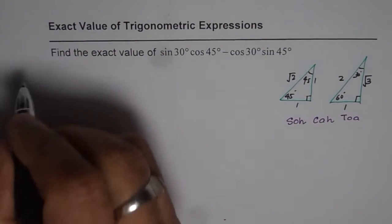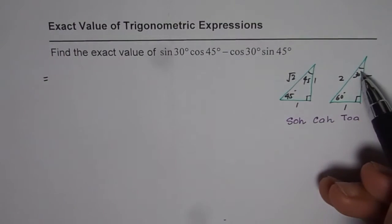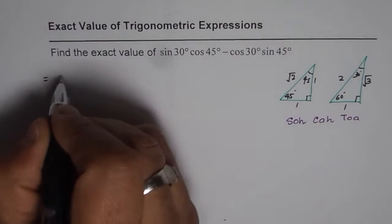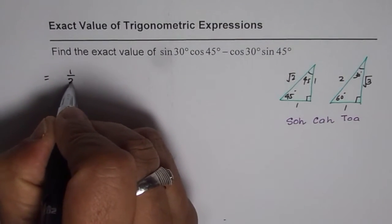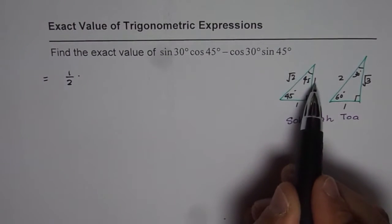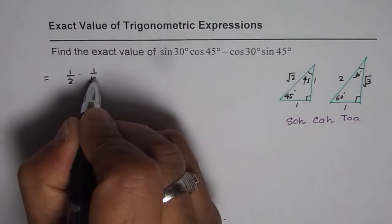Sin 30 degrees: look at the triangle. For 30, opposite is 1, hypotenuse is 2, so sin 30 is 1 over 2, or one half. Cos of 45: adjacent side is 1, hypotenuse is square root 2, so 1 over square root 2.